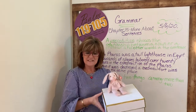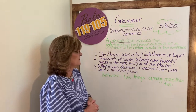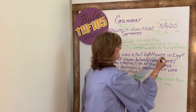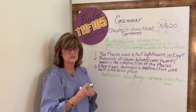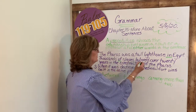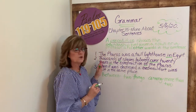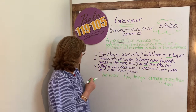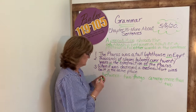We're going to look at some sentences and see if we can find the preposition. Number one: the Pharos was a tall lighthouse in Egypt. The preposition is 'in.' Number two: thousands of slaves labored over 20 years in the construction of the Pharos. There are four prepositions here: of, over, in, and of again. In chapter 15 we're going to be learning about different monuments and landmarks, and this was one in ancient Egypt. Number three: when it was destroyed, a medieval fort was built in the same place. 'In' is the preposition.